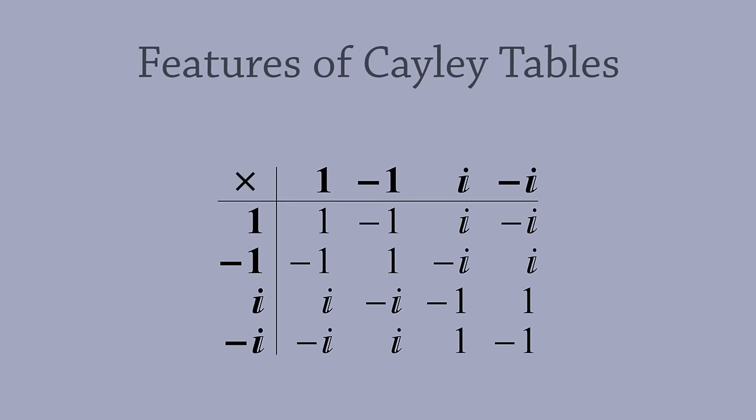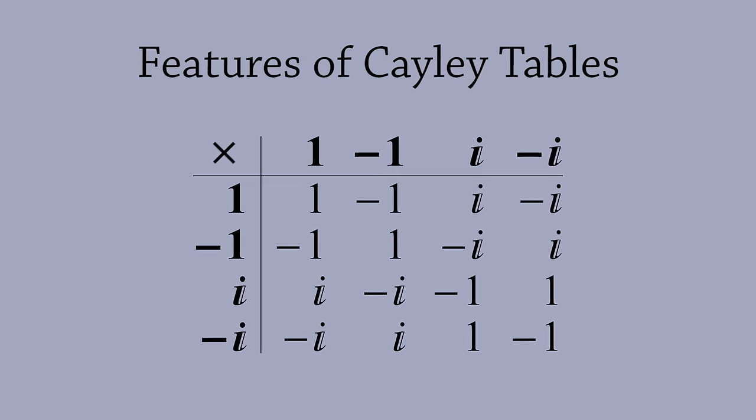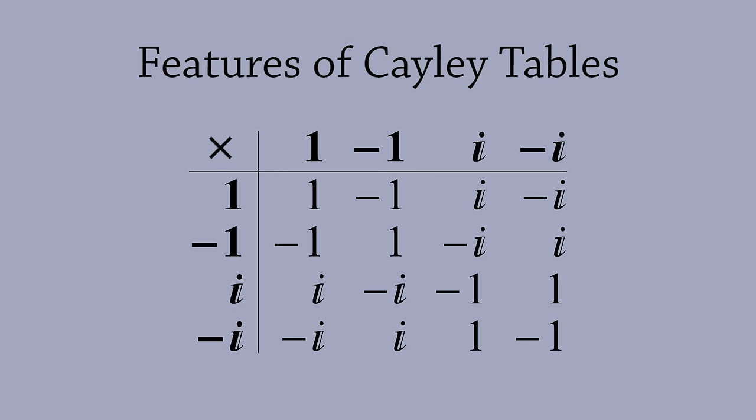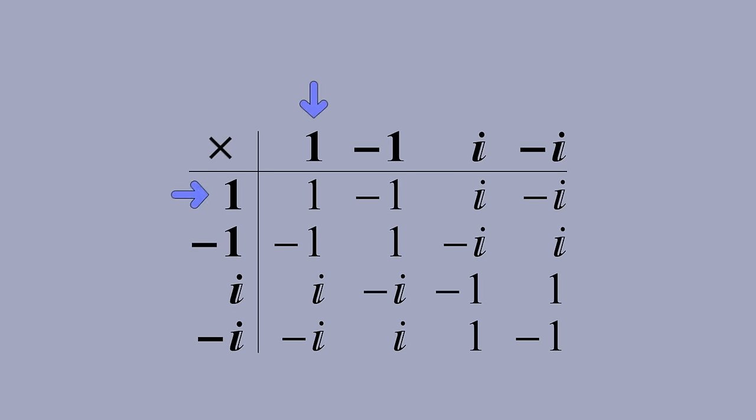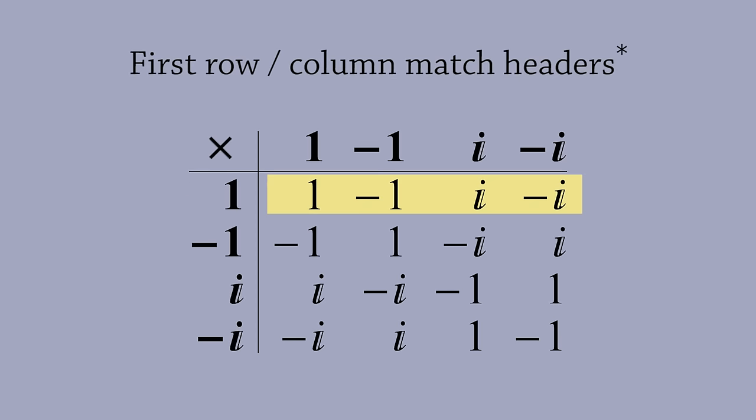I'd like to point out some interesting features of this group multiplication table. One feature that appears in every Cayley table is if you start with the identity element, then the first row and first column just repeat the elements in the headers. This is because if you multiply any element by the identity, you get the same element.